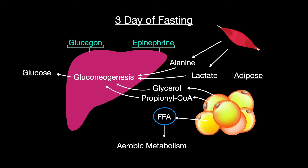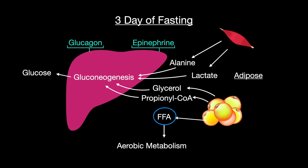Ketogenesis becomes the main source of energy until the fat stores are used up. As protein degradation speeds up, it eventually leads to organ failure and death.